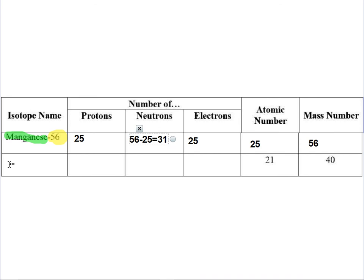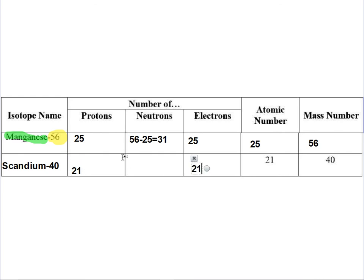The next problem: we have atomic number 21 and mass number 40. The atomic number tells you the element, so 21 is scandium. For the name: scandium-40. Scandium has 21 protons and 21 electrons. For the neutrons, the mass number equals protons plus neutrons, so take 40 minus the protons, which gives you 19 neutrons.